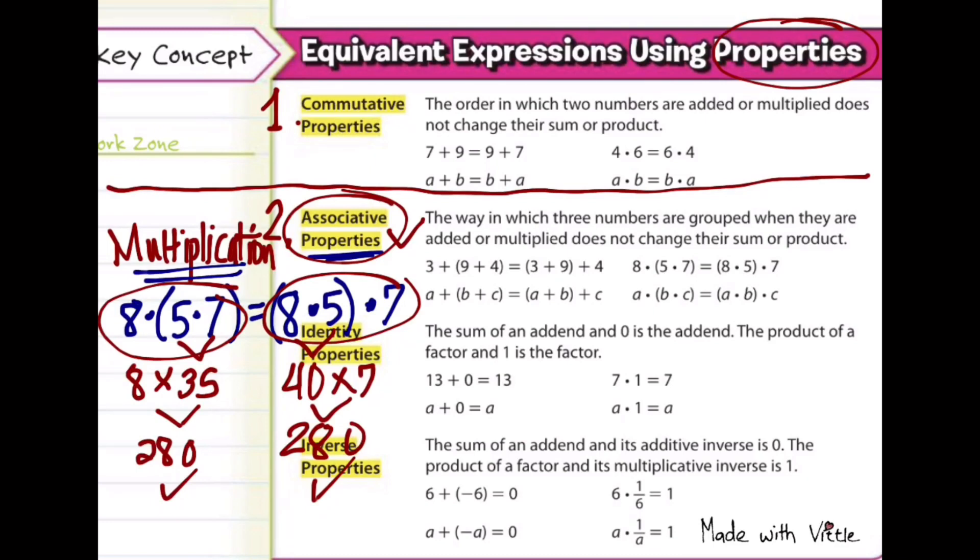And once again, when do you know it's associative property? There will be three numbers. And then one or a pair of numbers will be inside the parenthesis on the other side of the equation. And then on the right side, another pair will be inside the parenthesis. That's when you know an associative property is being applied.